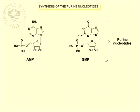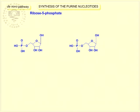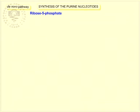Purine nucleotides are formed in two pathways. One of them is the so-called de novo pathway. The synthesis begins from ribose 5-phosphate generated by the pentose phosphate pathway. The enzyme phosphoribosyl pyrophosphate synthetase activates ribose 5-phosphate with ATP to form phosphoribosyl pyrophosphate.